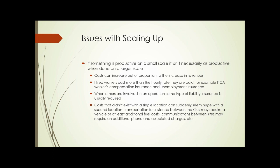Hired workers cost more than the hourly rate they're paid, because you have to pay FICA — the employer's share of Social Security — plus workers' compensation insurance and unemployment insurance. So paying someone $10 an hour typically costs $12, $13, or $14 an hour in real out-of-pocket costs. And when you involve someone else in your operation, you have to have some type of liability insurance to cover those people. Some of those costs increase at a higher rate than you might expect your revenue return.